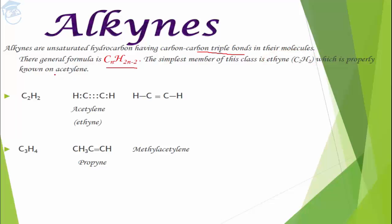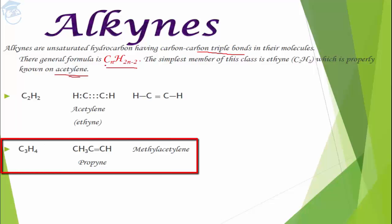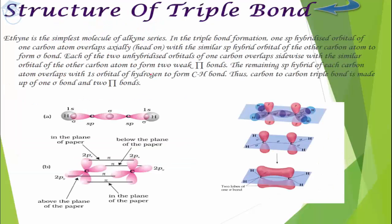C₂H₂ is also known as acetylene. If you put n = 3, you will get C₃H₄. This is propyne, and its common name is methyl acetylene.